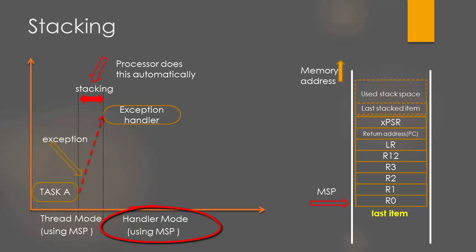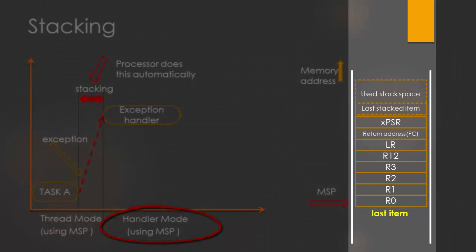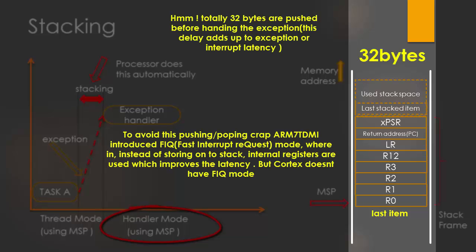The contents which are stacked onto the stack memory are called a stack frame. Registers R0 to R3 are pushed onto the stack along with R12, the link register (LR), the return address, and the XPSR which is the processor status register. So totally 32 bytes have been pushed onto the stack.